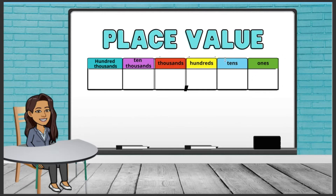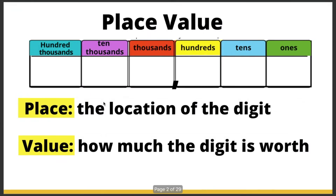We have the ones, the tens, hundreds, thousands, ten thousands, and hundred thousands. Place value: 'place' means the location of the digit, and 'value' means how much the digit is worth.